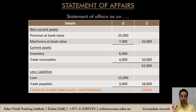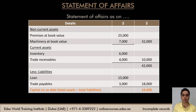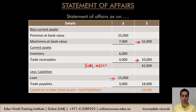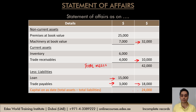Here is an extract of a statement of affairs using random values. The statement begins with non-current assets totalling 32,000, then current assets — inventory and trade receivables — totalling 10,000, giving total assets of 42,000. We then subtract liabilities: a non-current liability (loan) and current liabilities totalling 18,000. The net assets, which equals capital (assets minus liabilities), comes to 24,000.